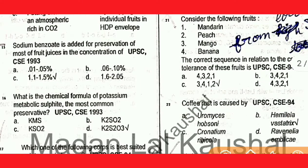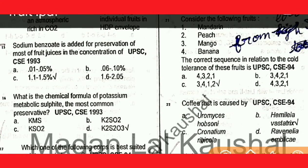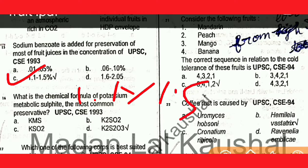Next question: sodium benzoate is added for the preservation of most fruit juices at a concentration of 1.1 to 1.5 grams per kilogram. Option C is correct.